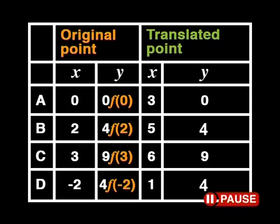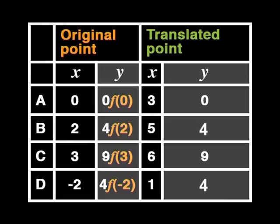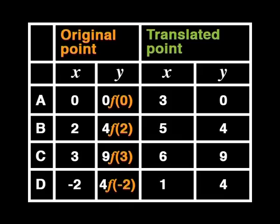Good. Next, we'll look at the translated points. Can you see any patterns here? We know that X values of the translated points have all increased by three, and the Y values haven't changed. Do you have any idea how to write that in function notation? May I try? Sure. Go ahead.